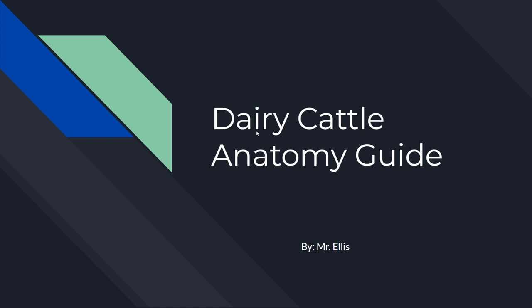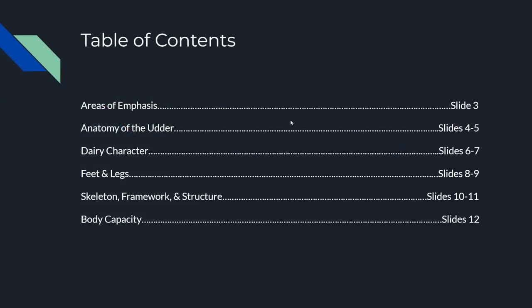Here are some of the things anatomically that we're going to be looking at. I have the slides broken down into different areas. We have some emphasis areas and how we should prioritize these different pieces of anatomy. We have the anatomy of the udder, dairy character, feet and legs, skeleton framework and structure, and finally body capacity.